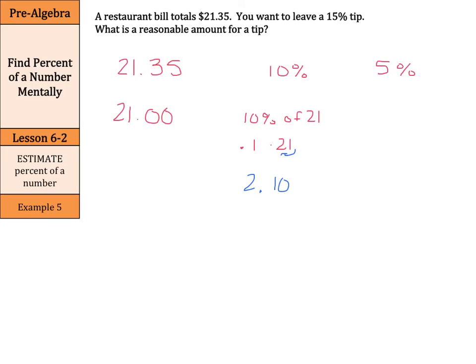Well, that $2.10 is 10%. What is the relationship between 10% and 5%? Well, 5% is half of 10%. So we can take our $2.10. And we can take our $2.10 and find half of that. And half of $2.10 is $1.05.